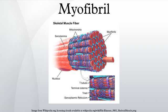In striated muscle, such as skeletal and cardiac muscle, the actin and myosin filaments each have a specific and constant length on the order of a few micrometers, far less than the length of the elongated muscle cell. The filaments are organized into repeated subunits along the length of the myofibril. These subunits are called sarcomeres. The muscle cell is nearly filled with myofibrils running parallel to each other on the long axis of the cell.